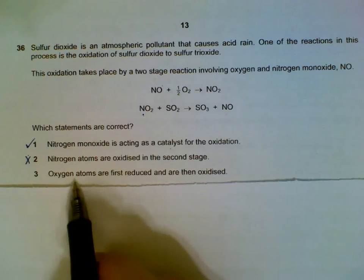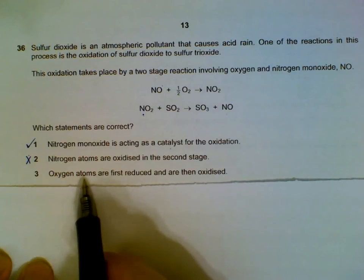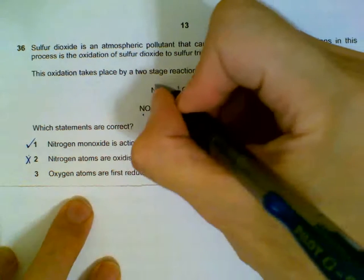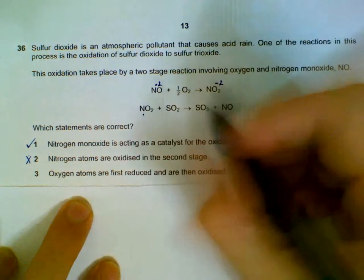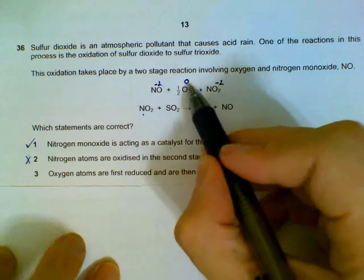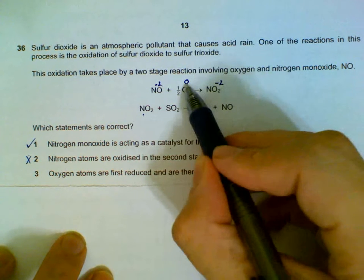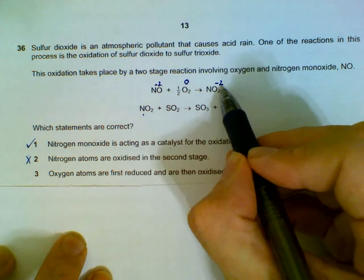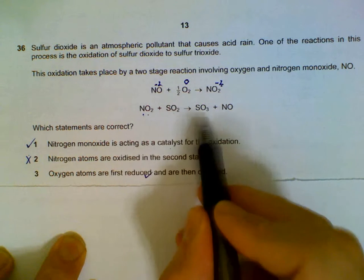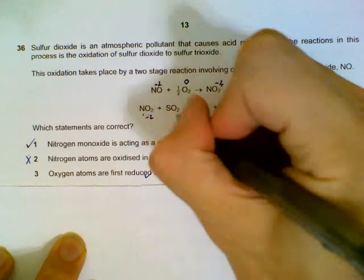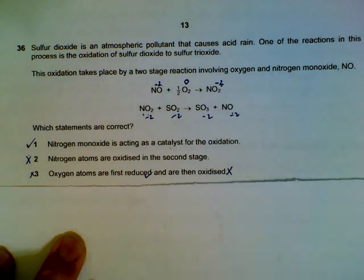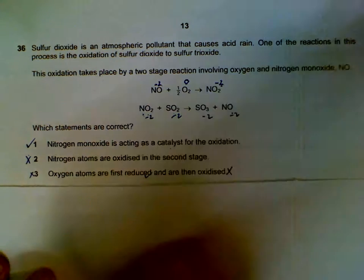We see oxygen atoms are first reduced and then oxidized. First reduced - let's see the oxygen atoms here. This is minus 2. Each oxygen is minus 2 here. We are comparing this one - each element is 0. It is first being reduced because it goes from 0 and decreases to minus 2. So this is correct. And then oxidized - for all these compounds, oxygen is minus 2 throughout. So this part is not correct. Statement 2 is wrong, so there can only be one possibility.